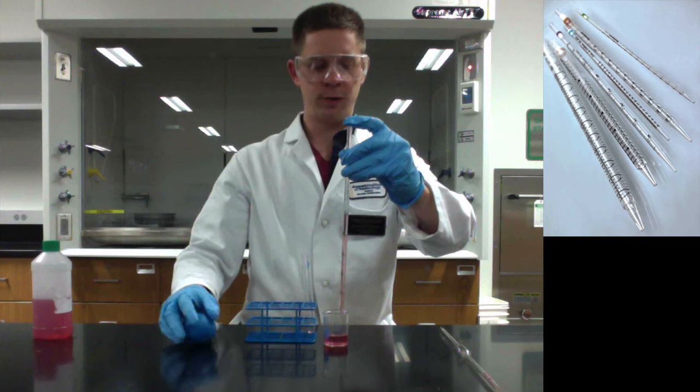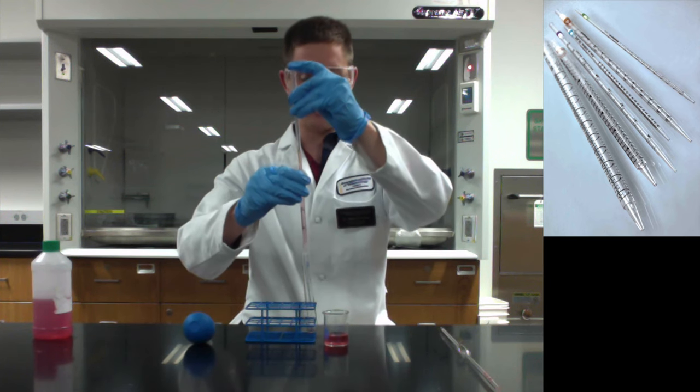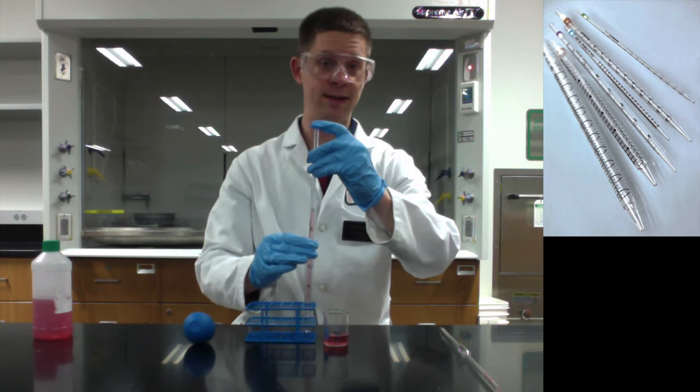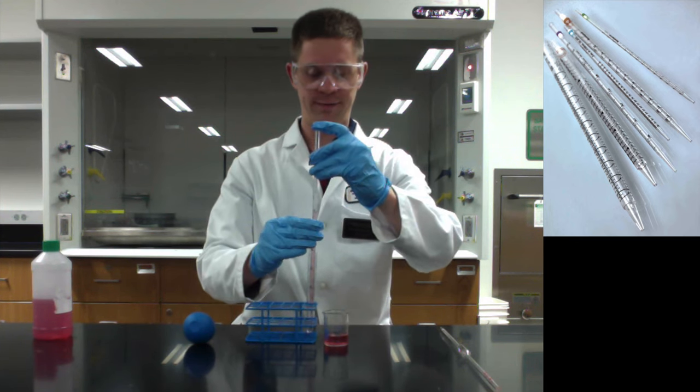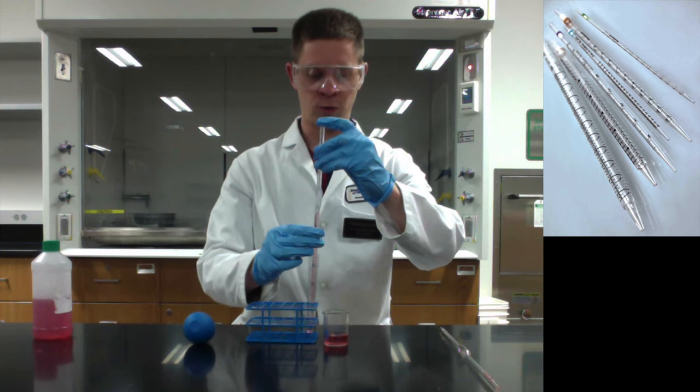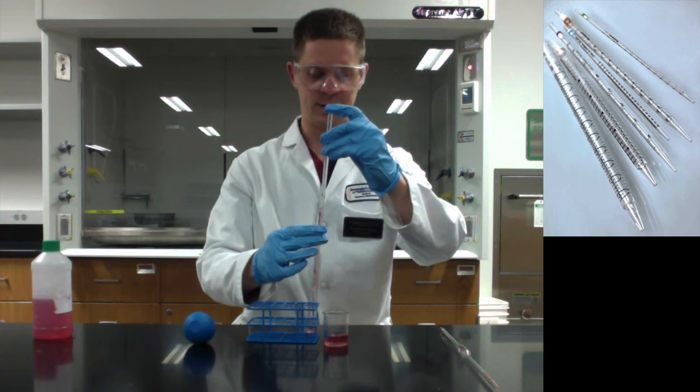So we want to deliver 2.6 milliliters and so at this point I can transfer this over here to the test tube where I'm ready to deliver and use the exact same technique I just used. Essentially very gently twist the tube or kind of let up pressure off of my finger and allow the liquid to be delivered.